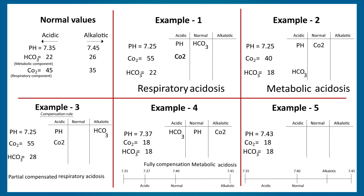Example five: pH is 7.43, CO2 is 18, and HCO3 is 18 — again all in different groups. Applying the same rule, pH at 7.43 is near the alkalotic range, so this is alkalosis. The respiratory component CO2 lies in the alkalotic group, and since the pH has been fully brought to the normal range, this is fully compensated respiratory alkalosis.